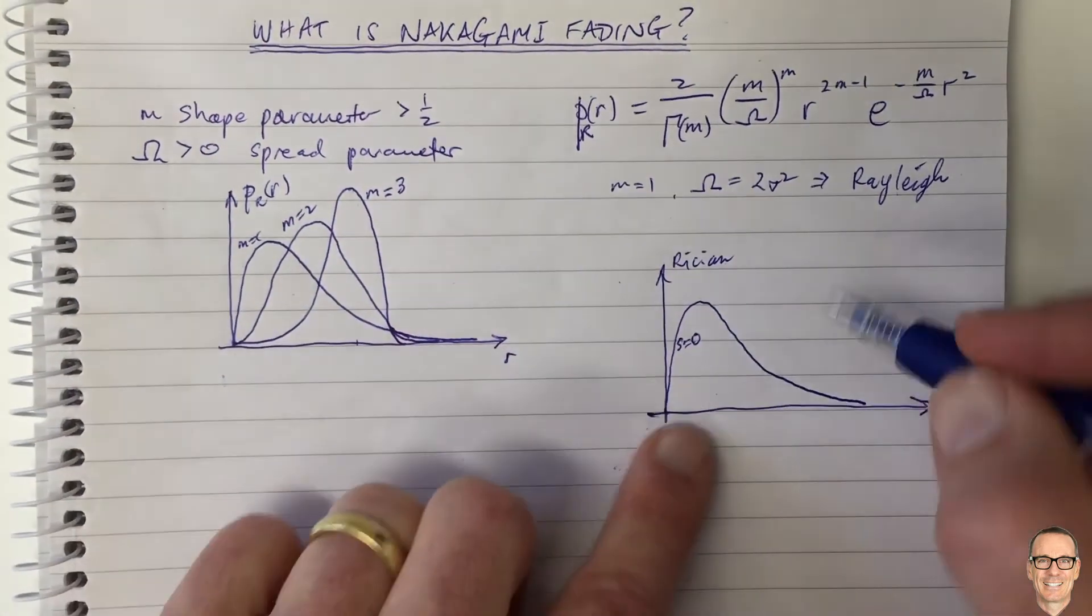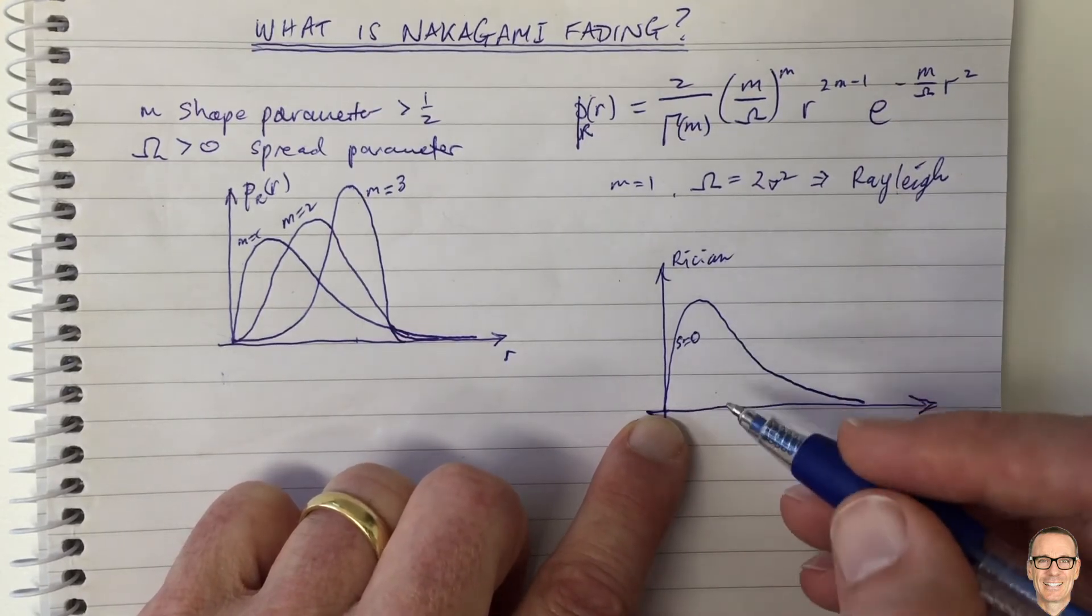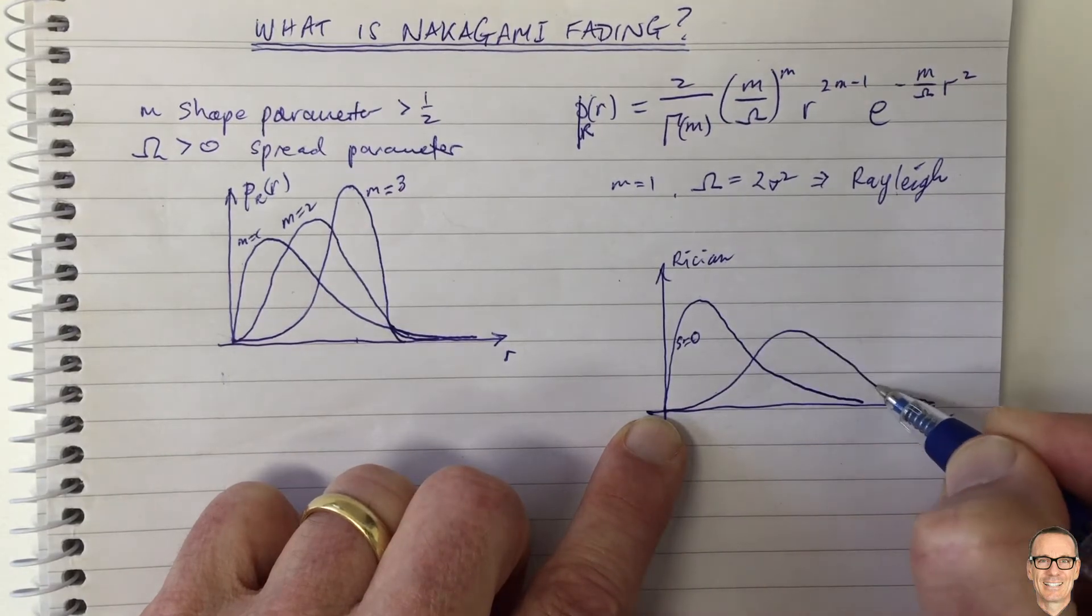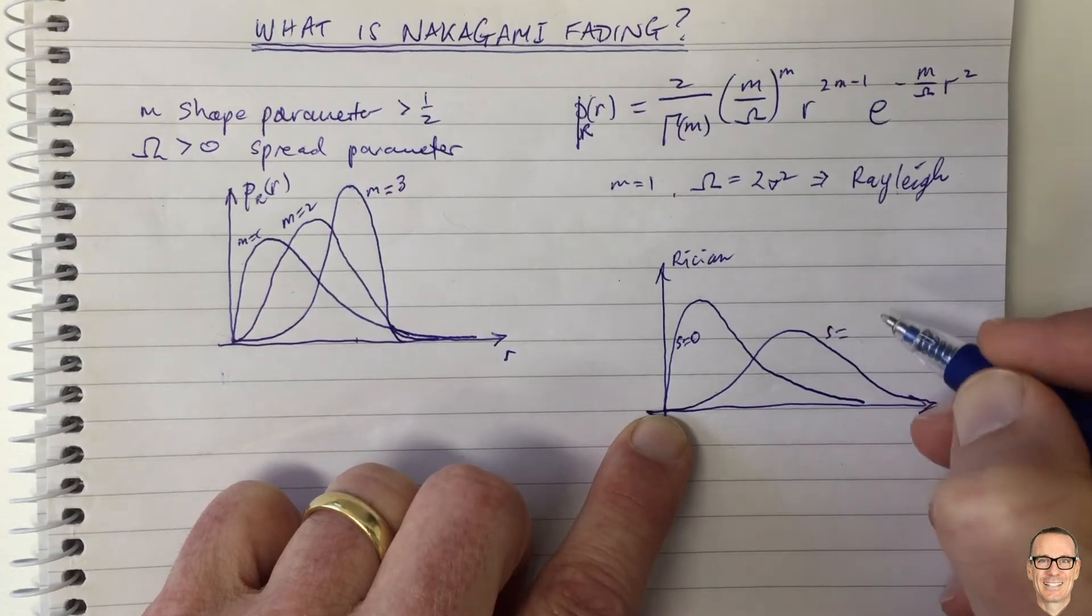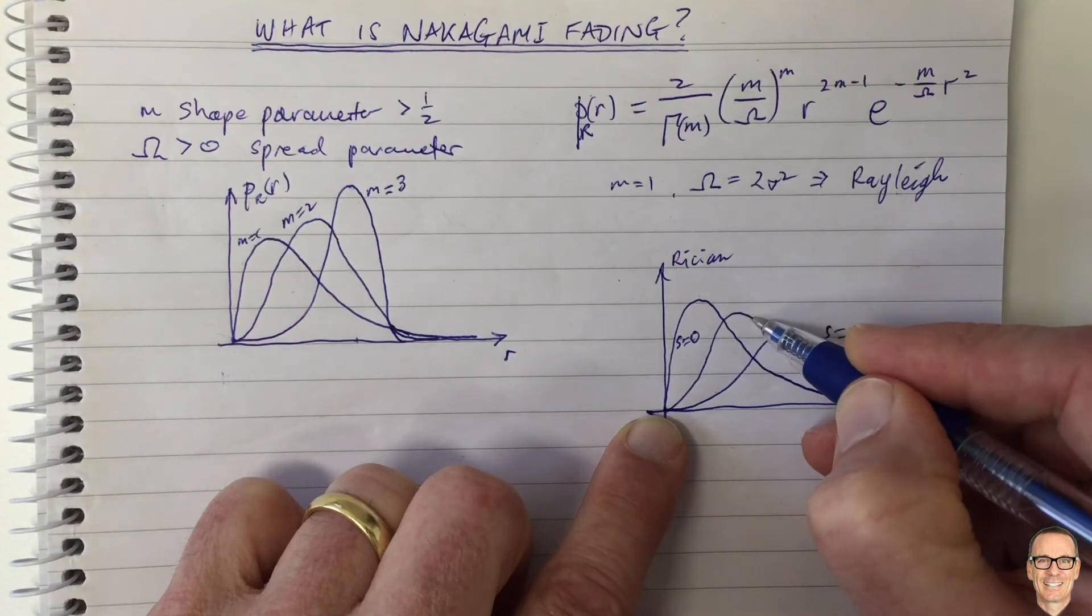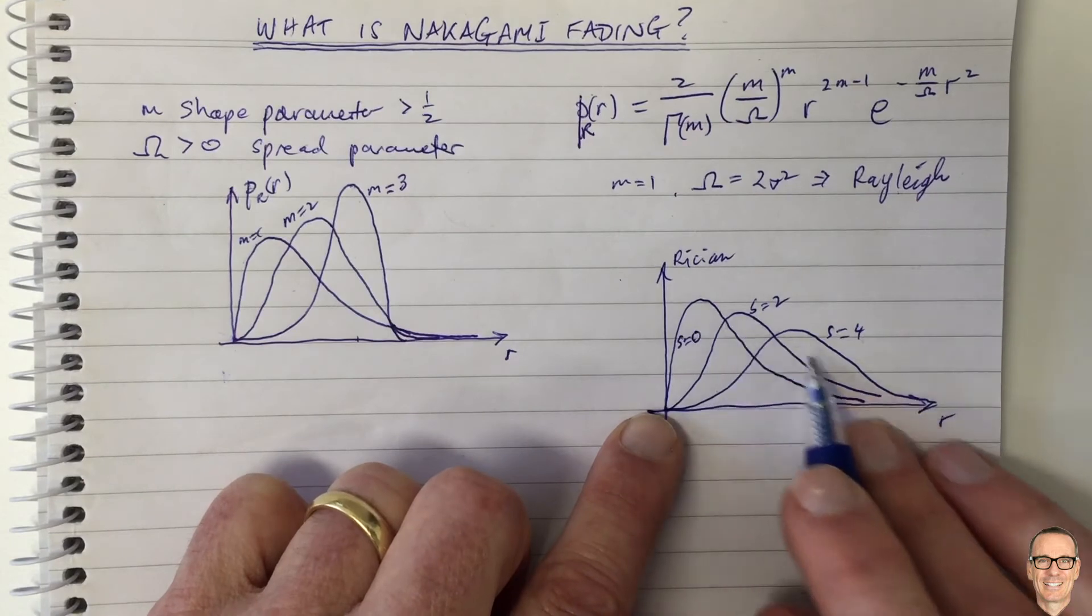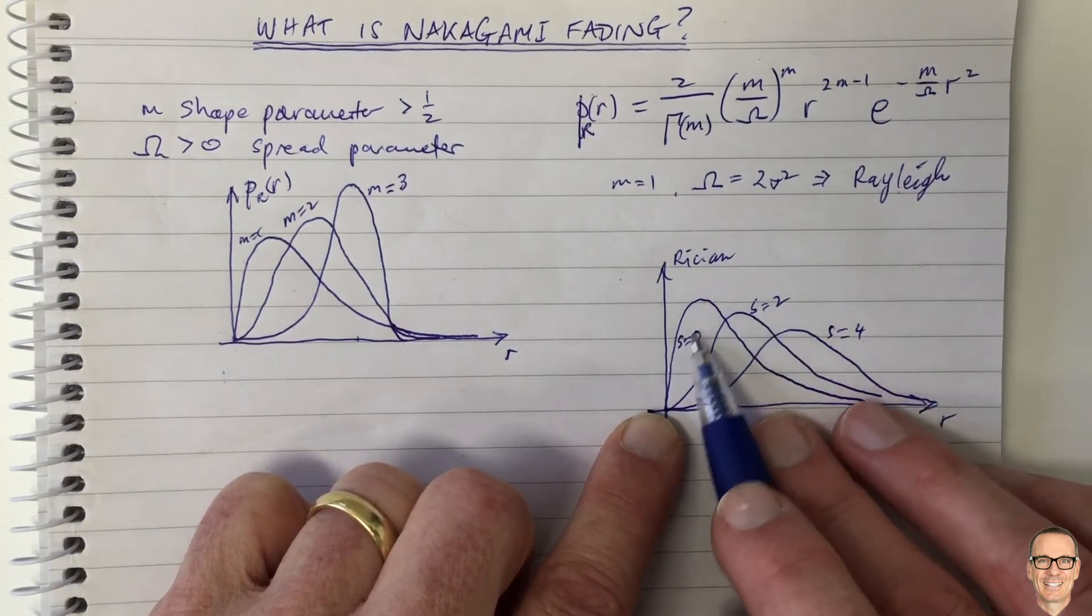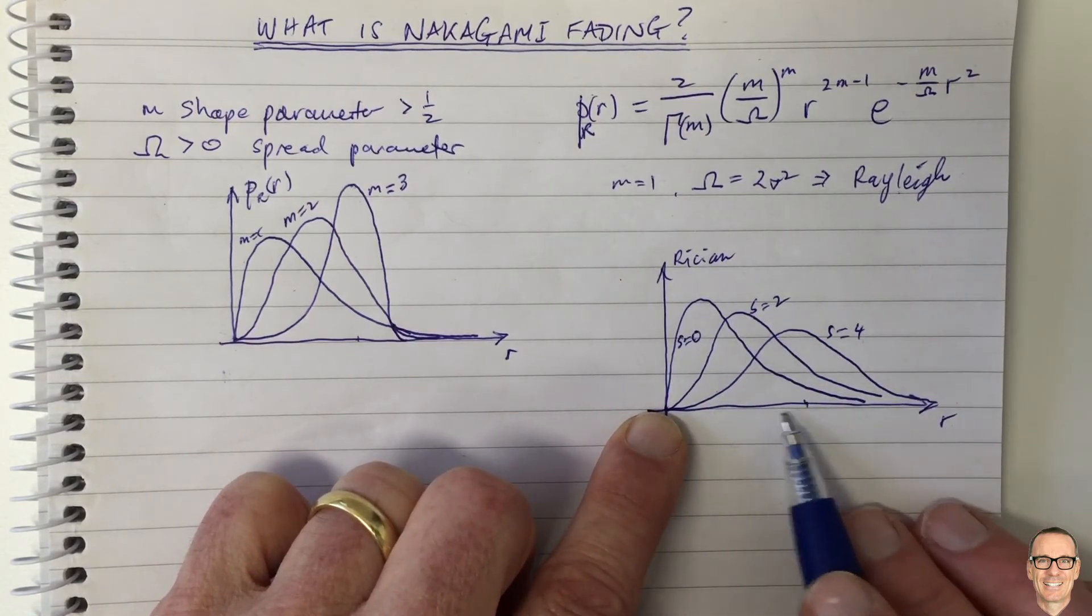So what happens if we increase the S parameter, which is the mean of the line of sight parameter in Ricean? Well, you get a shape which is more spread out and with a lower amplitude. So this would be S equals 4 for example, and maybe this is S equals 2. So this is what happens with the Ricean PDF as you increase the parameter S: you go from the Rayleigh to these more spread out curves with the dominating path, which shows there's more chance of having a higher value.